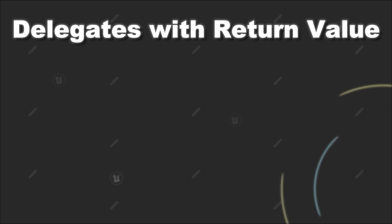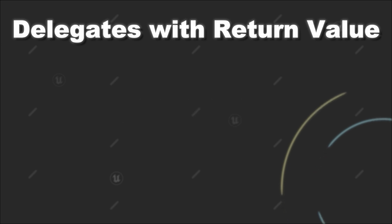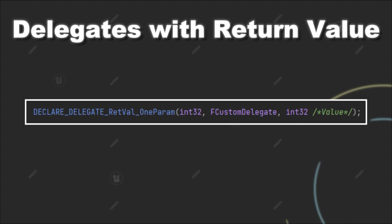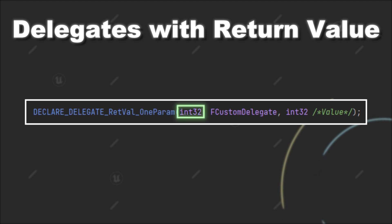So with that, let's look at the implementation. To add a return value to your delegate, you have to add the RetVal keyword to the declaration of your delegate. For example, for a single delegate that only works in C++ and has one parameter, it would look like this. The keyword for the return value comes after the delegate keyword and before the keyword that indicates the number of parameters. Further, you also have to provide the data type of your return value as the first value of the argument list, in front of the type definition of your new delegate.